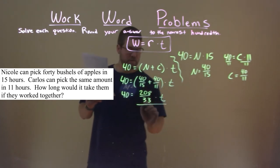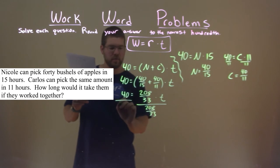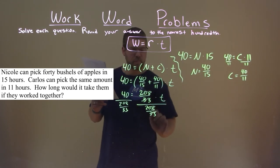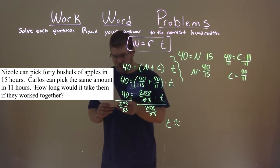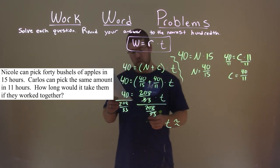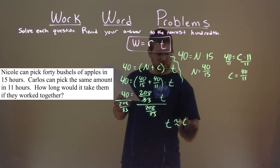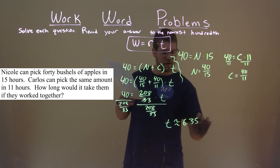We divide this big fraction, 208 over 33, on both sides. These cancel, and we're left with time by itself. It's approximately, and 40 divided by 208 over 33 is approximately 6.35 hours.